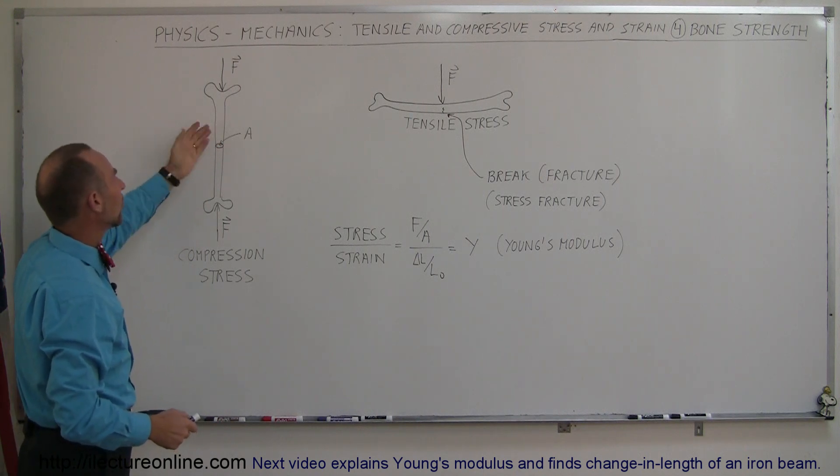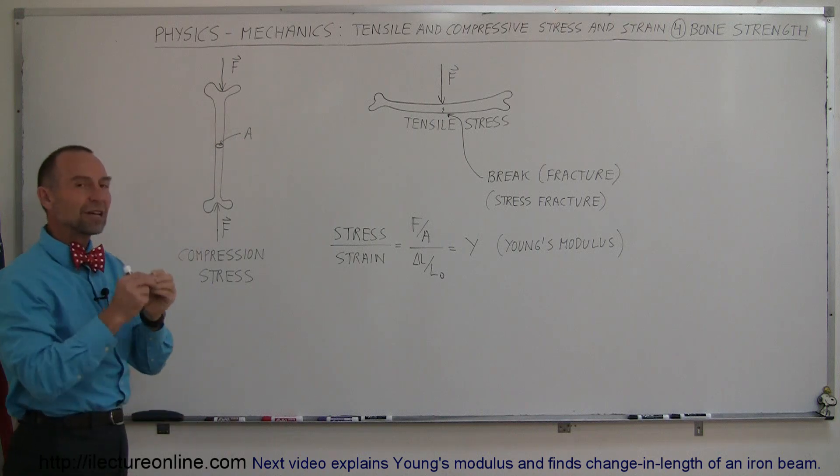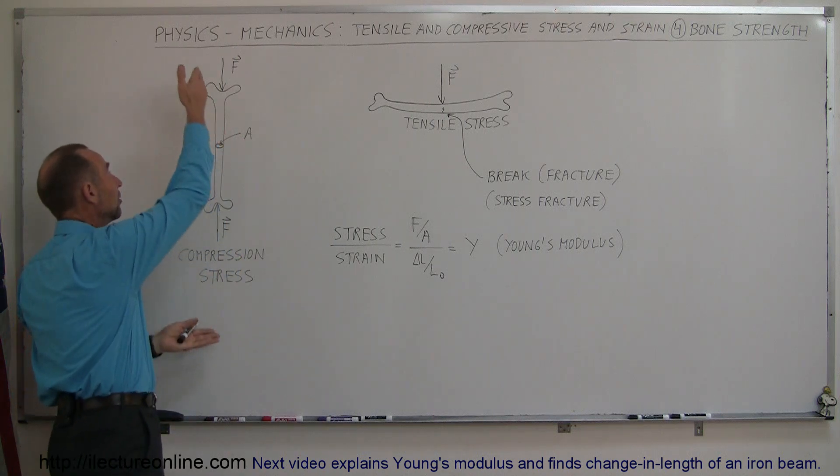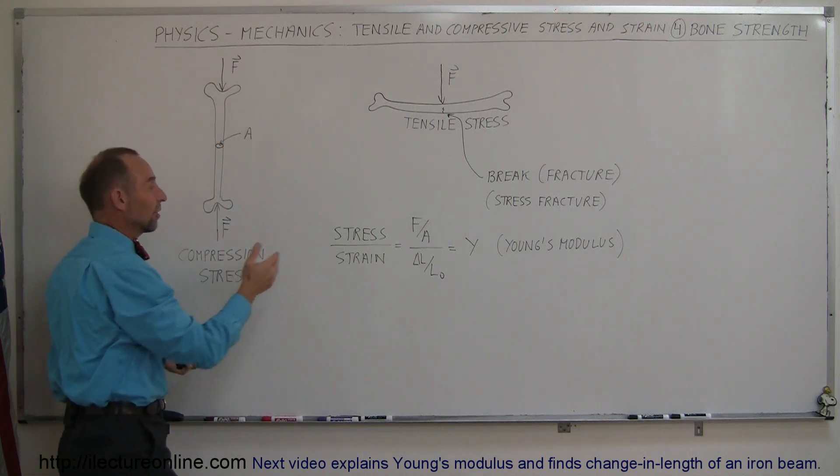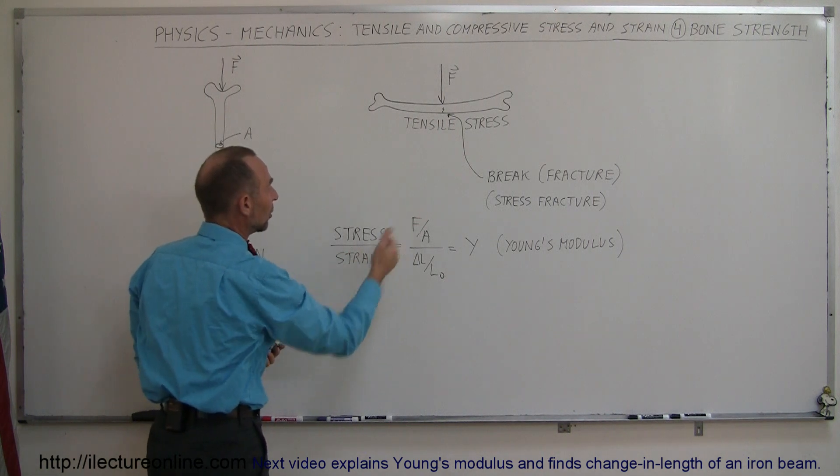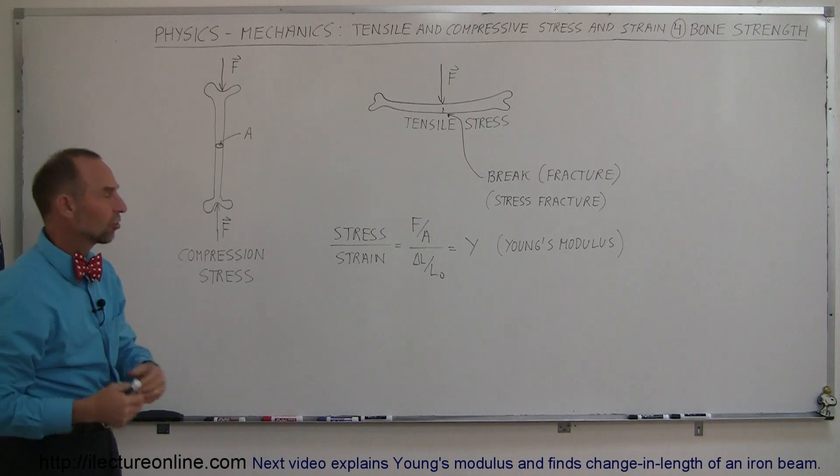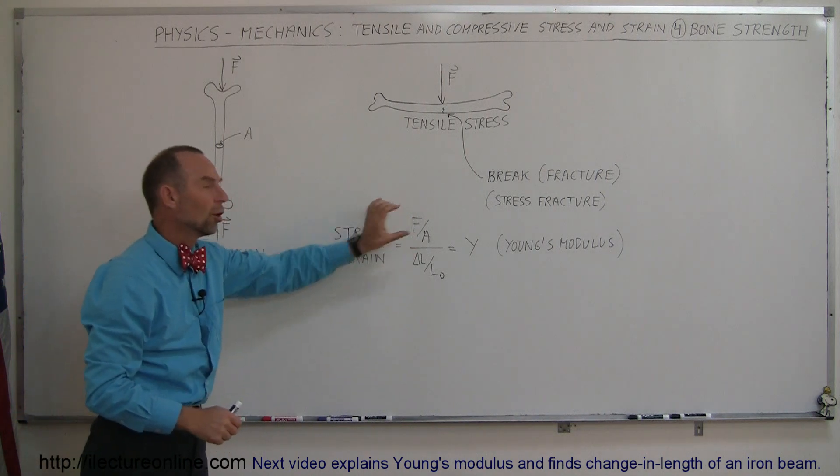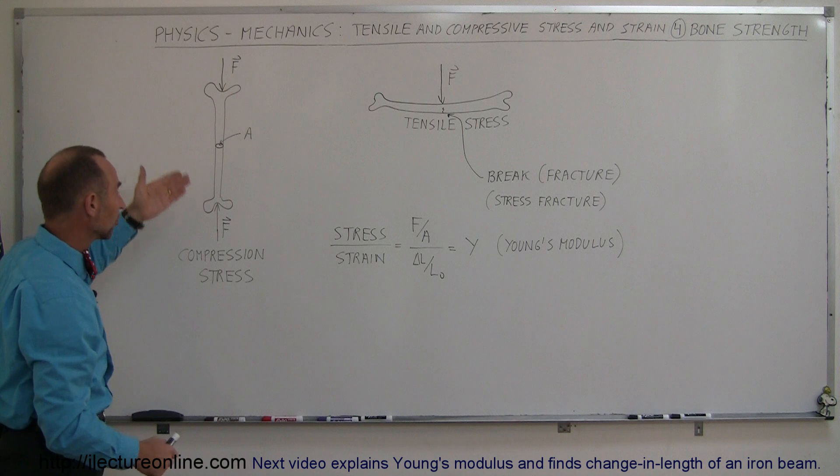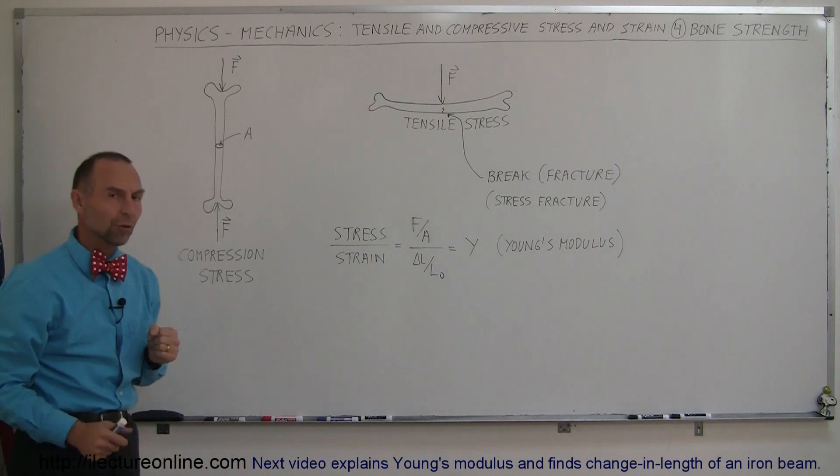But if you look at all the material that the bone is made of and you find the effective cross-sectional area and then figure out how much force it needs to withstand, you can see that the bones in the human body can withstand a lot of stress. There's not going to be a lot of deformation with a large application of force on the bones like this. That's what bones are made for.